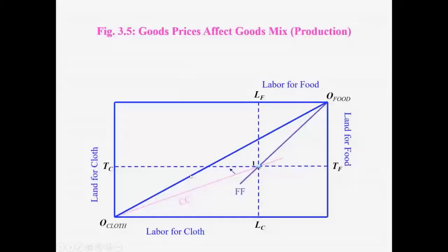Now, what does that imply for good mixes? Well, in the cloth sector, the T by L ratio was given by this line initially. Now the T by L ratio has increased.